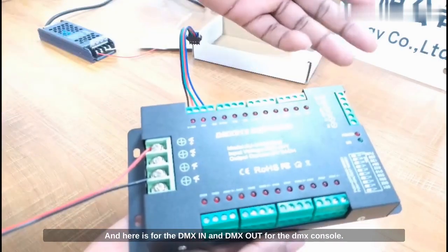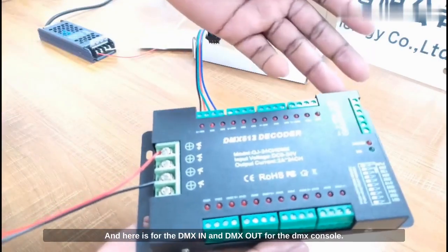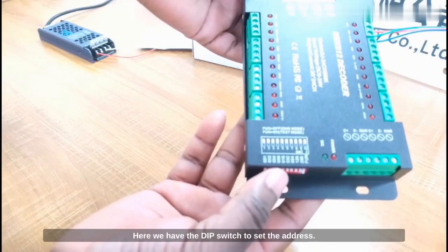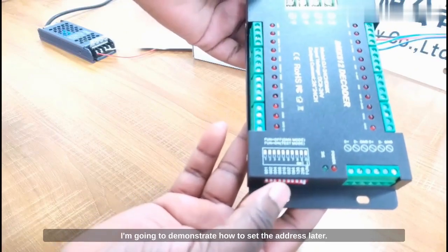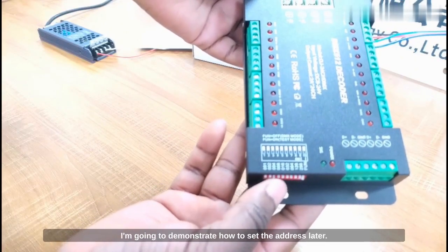And here is for the DMX in and DMX out for the DMX console. Here we have the DIP switch to set the address. I'm going to demonstrate how to set the address later.